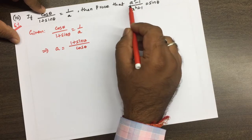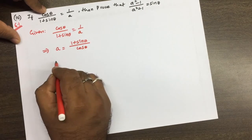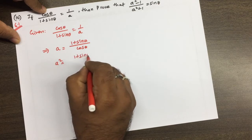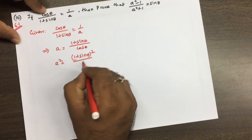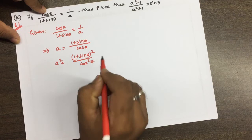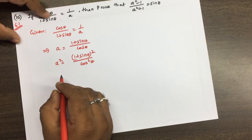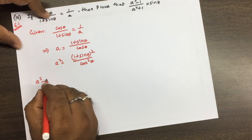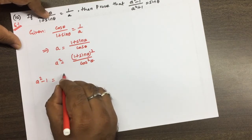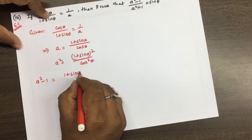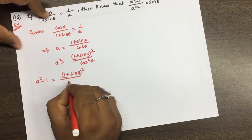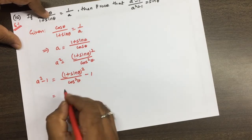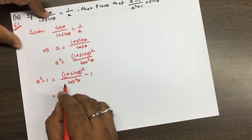So what is a²? We have to find it first. So a² is (1 + sin θ)² / cos²θ. Next, a² - 1 is (1 + sin θ)² / cos²θ minus 1. This is the expansion we have to find.